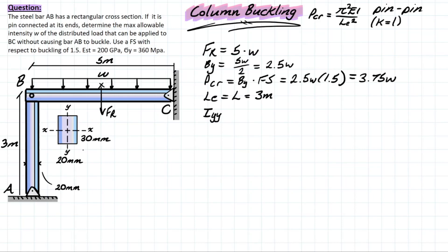We are going to be using Iyy, and let me explain why. This is because the lowest moment of inertia value is going to govern which direction your member will buckle in. So we know that the formula for inertia looks something like this: we have 1 over 12 base height cubed.